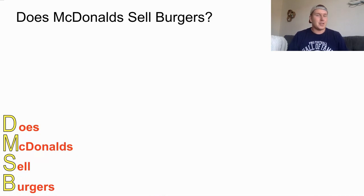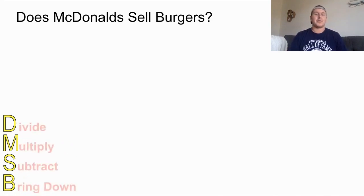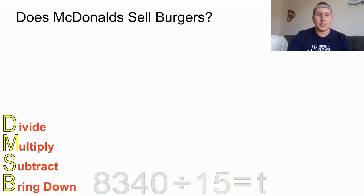Does McDonald's sell burgers? It's just a good way to remember the steps when you're doing standard algorithm for division. So, DMSB actually stands for divide, multiply, subtract, bring down. If you can remember this, it'll make it a lot easier when you're trying to divide using the standard algorithm. So let's take a look at an equation. We've got 8,340 divided by 15.